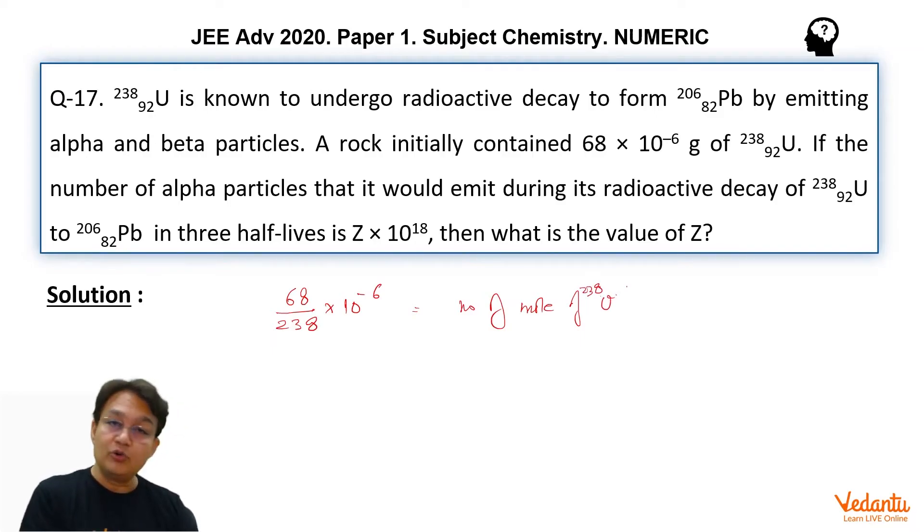And if we convert it into numbers, because in radioactivity we need numbers, then we will have 68 upon 238 × 10^-6 × 6.023 × 10^23. Let us call this number as N0. This is the number of uranium atoms which was initially present.